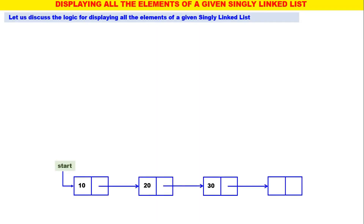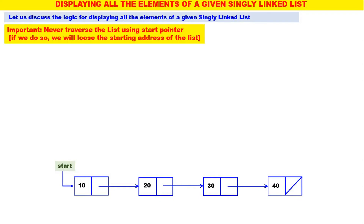This is our linked list. There are 4 elements: 10, 20, 30, 40, and start is containing the address of the linked list. This is very important, therefore in red color bold: never traverse the list using the start pointer. If we do so, we will lose the starting address of the list.